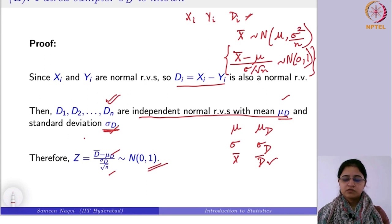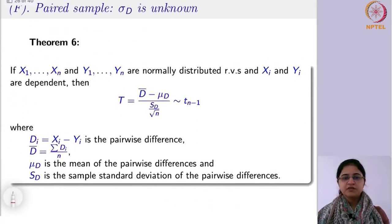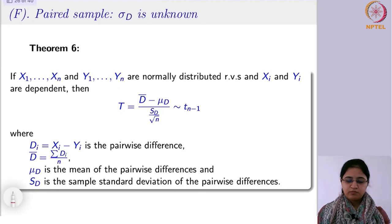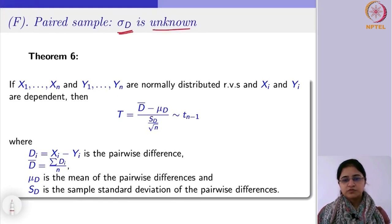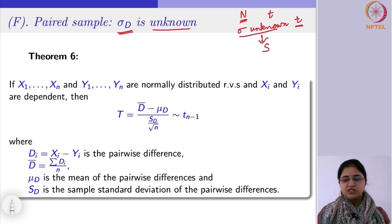Likewise, the other case is when the population standard deviation sigma_d is unknown. If you recall from last week, when sigma is unknown you no longer have the standard normal or normal distribution, but rather a t-distribution. Whenever sigma is unknown, the t-distribution comes into picture, and you replace sigma with the corresponding sample standard deviation — the same thing as we did last week.